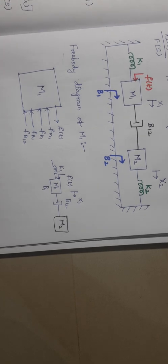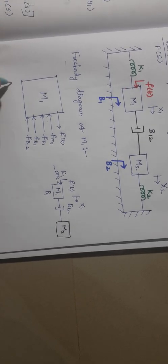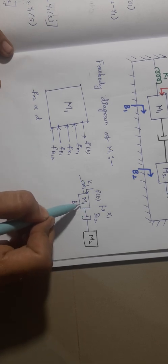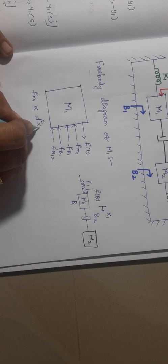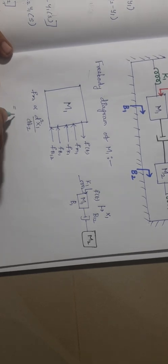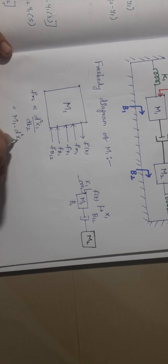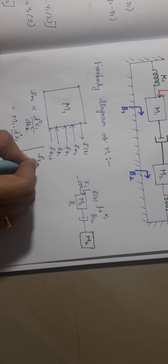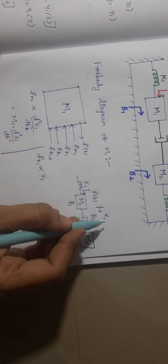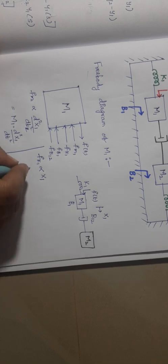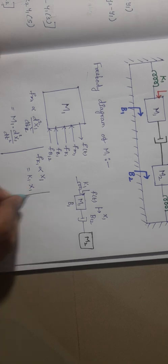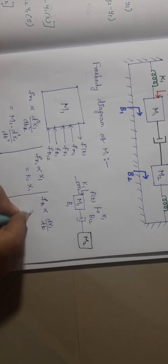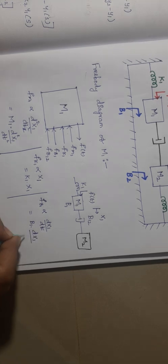Now I am going to write force balance equations. Here fm1 is directly proportional to the respective displacement x1, so fm1 equals m1 times d²x1/dt². Next, fk1 is directly proportional to displacement x1, so fk1 equals k1 times x1. And fb1 is directly proportional to dx1/dt, so fb1 equals b1 times dx1/dt.